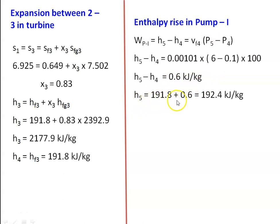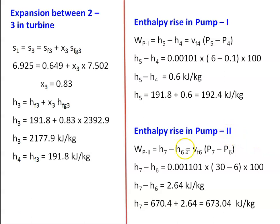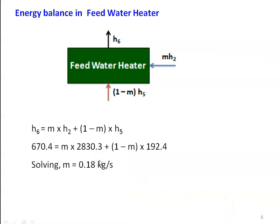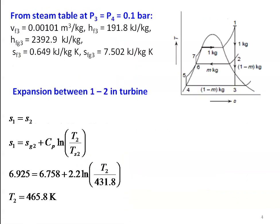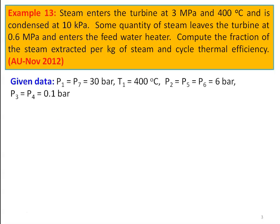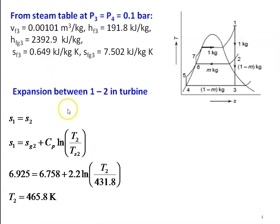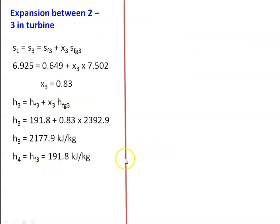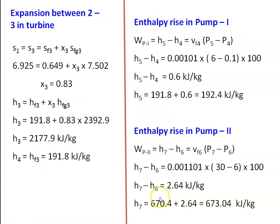Therefore H5 equal to 191.8 plus 0.6 equal to 192.4 kJ/kg. For pump 2: H7 minus HF6 equal to VF6 times (P7 minus P6) equal to 2.64 kJ/kg. So H7 equal to 670.4 plus 2.64 equal to 673.04 kJ/kg. We have now calculated all enthalpies: H1, H2, H6, H3, H4, H5, and H7.